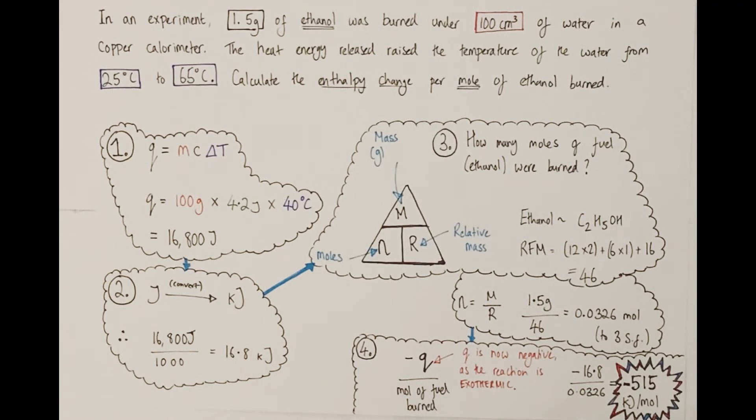Why would that be? Well, that's implying and telling the observer that Q is now negative because the reaction was exothermic. And as we know from prior learning, exothermic reactions give out heat energy to the surroundings and are negative enthalpy changes. Hence, our Q value must also be negative to reflect that. So we take minus Q divided by the number of moles of fuel burned. That would be minus 16.8 kilojoules divided by 0.0326, the number of moles of ethanol utilized, giving us our enthalpy change per mole for ethanol as minus 515 kilojoules per mole.